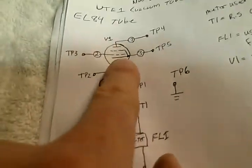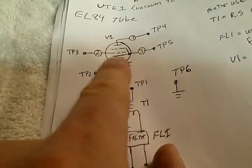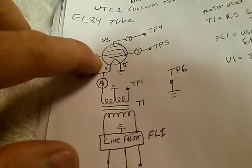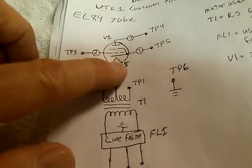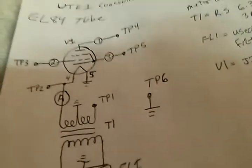This is grid number one. This is grid number two. Three is also hooked to the cathode. Then we get the plate up here as test point number four.